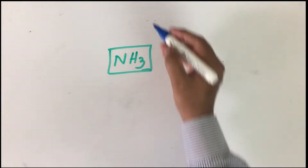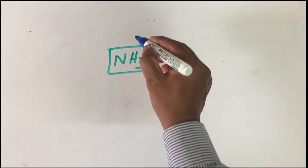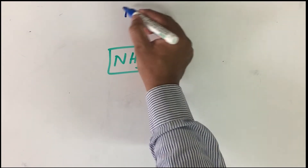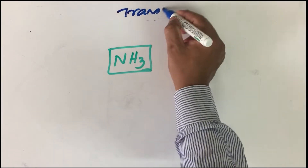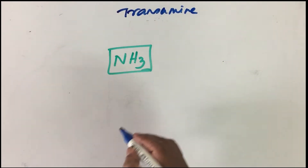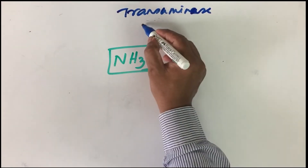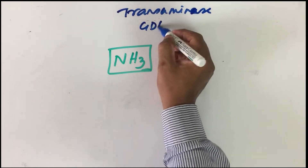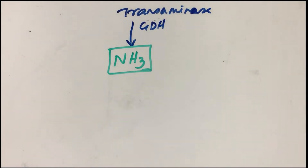One possibility is through the transamination reaction. Transamination reaction, combined with glutamate dehydrogenase, will yield ammonia. That is one source of ammonia that we have learned so far.